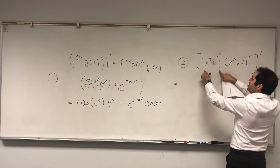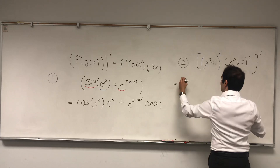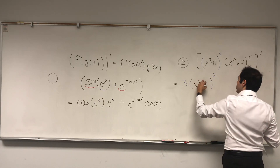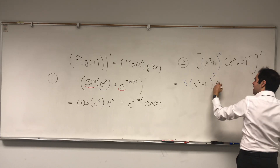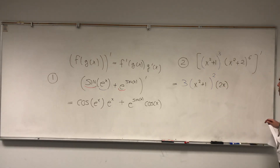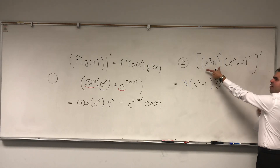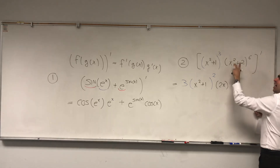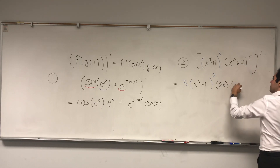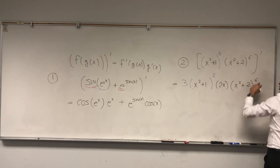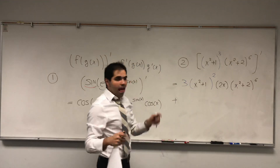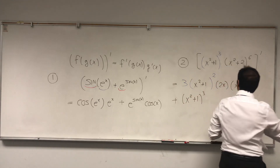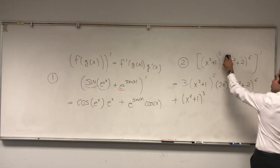So we first differentiate the outside function, which becomes 3 times blah blah squared, but the inside is x squared plus 1, times the derivative of the inside function, which is 2x. But remember, this part is like f prime. And to apply the product rule, you need to do f prime g plus f g prime. So don't forget about this part — so times x squared plus 2 to the sixth power. And then you do f times g prime: x squared plus 1 cubed, times the derivative of this one, for which we use the chain rule.